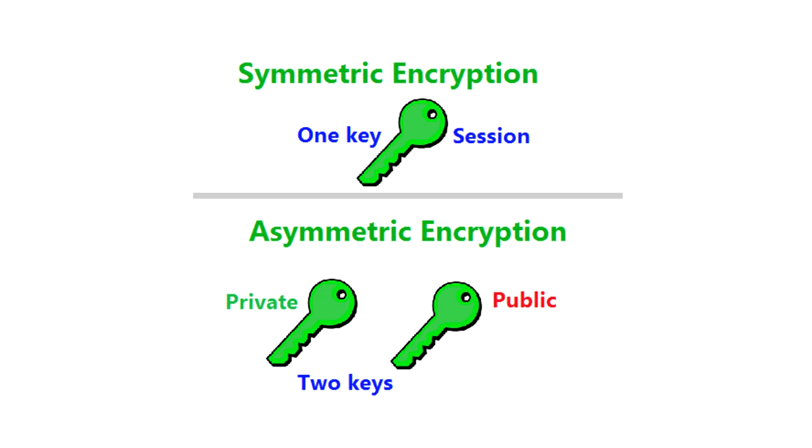We will talk about Symmetric Key Encryption and Asymmetric Key Encryption. With symmetric key encryption, we also need to share the key, which can be a problem. This is the solution: we have to use asymmetric key encryption with a public-private key pair.